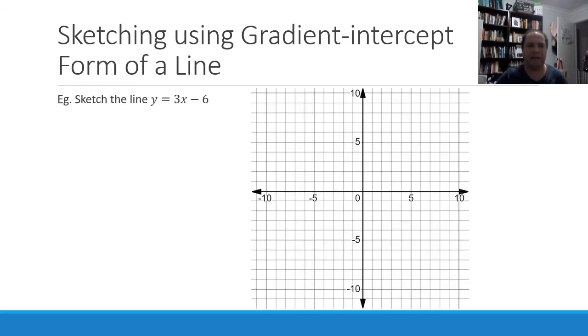All right, so let's do an example. Let's sketch the line y equals 3x minus 6. First of all, we can see our y-intercept is negative 6, looking at our equation there. So we'll plot negative 6 on our graph right here. Now, looking at our gradient, our gradient m is 3.